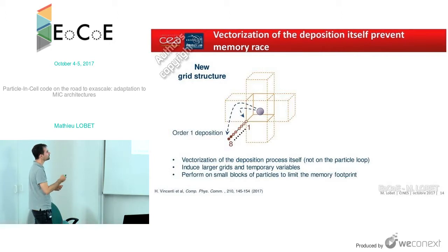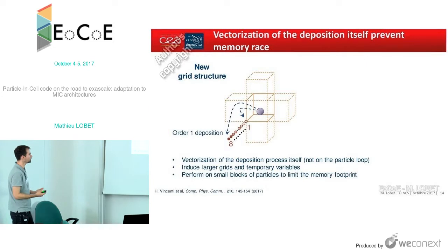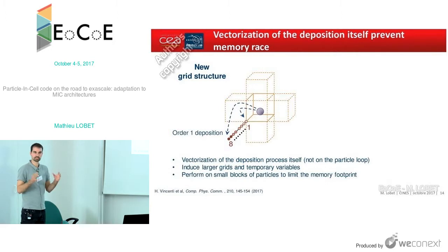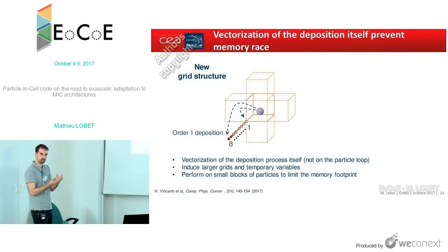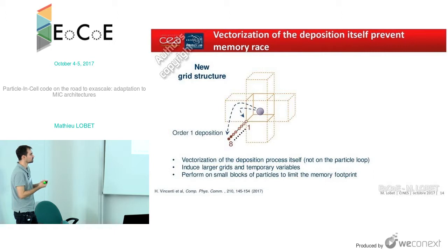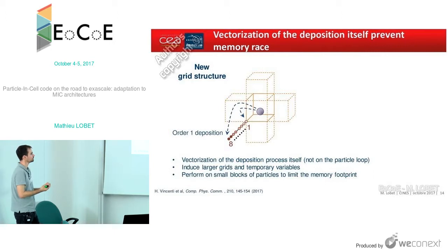When the particle deposits its contributions, it will do so in these 8 elements. Because they are contiguous, the vectorization can be performed in an efficient way. We will not have a gather or scatter operation, contrary to the previous classical algorithm. The problem is that such a new data structure induces more memory and more temporary variables. We can handle it if we use smaller tiles, so it's not really an issue. We can even do a decomposition of the tiles into smaller sub-blocks, which is a solution we didn't implement but that can be done.